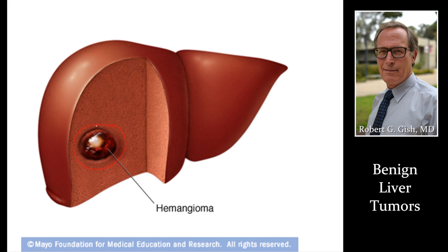Hemangiomas are the most common benign tumor of the liver. They basically don't turn into cancer and extremely rarely need surgery or resection. We follow them every three to five years just to make sure they're not changing, but that's probably even overkill.